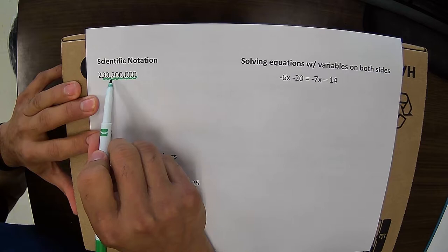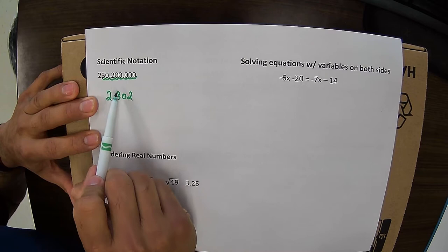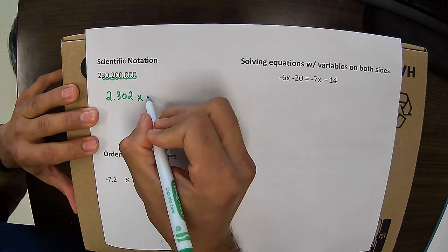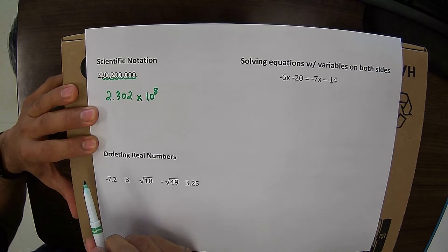Now, I always have to include every non-zero digit number. So for this number, I'm going to put 2.302 because I have to include the 2, and I have to include the space in between the 3 and the 2. This one would be 2.302 times 10. And I went forward 8 spaces. Since my number is a very large number, my exponent is going to be positive.